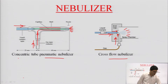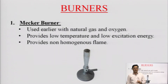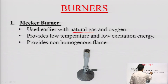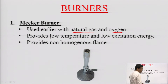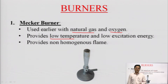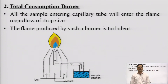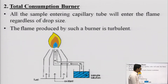Regarding the burner component, the first type is the maker burner, which is outdated and previously used. It generally uses natural chemical gas with air or oxygen, giving low-temperature flames and low excitation energy. The major drawback is that it provides a non-homogeneous flame with low energy, so maker burners are now obsolete. Primarily, two major types of burners are used: the total consumption burner and the premix burner.